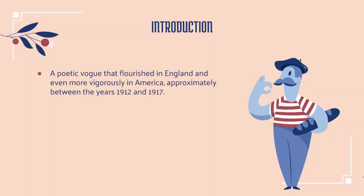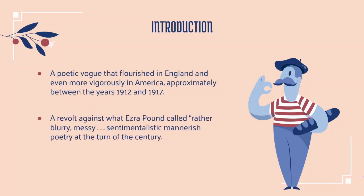Imagism was a poetic movement that flourished in England and even more vigorously in America. Many of its practitioners were Americans, like Ezra Pound, though he didn't live in America. The movement lasted approximately from 1912 to 1917 — short-lived, but very influential. Traces of imagism can still be seen in poems written today. It was a revolt against what Pound called the blurry, messy, sentimental, and mannered poetry of the turn of the century.